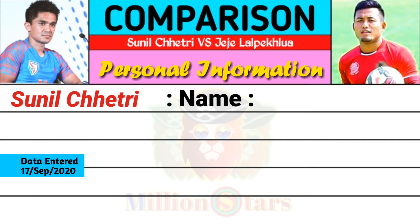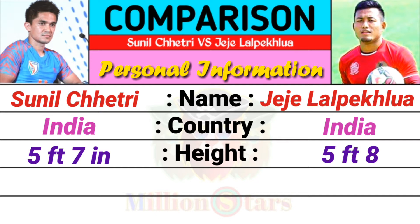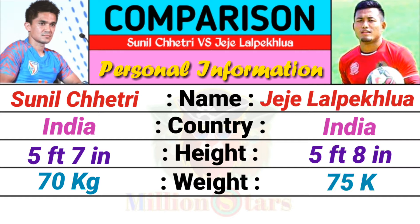Personal Information. Name: Sunil Chhetri and JJ Lalpekhlua. Country: Sunil Chhetri is India, JJ is India. Height: Sunil is 5 feet 7 inches, JJ is 5 feet 8 inches. Weight: Sunil is 70 kgs, JJ is 75 kgs. Jersey number: Sunil is 11, JJ is 12.